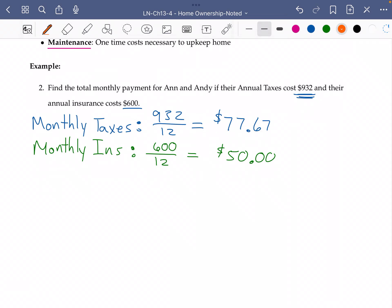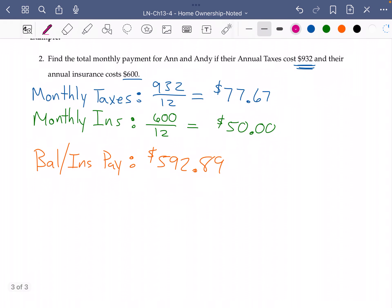...our balance and interest payment, we found in our last video that it was $592.89 that this couple is paying for just towards the balance and interest.